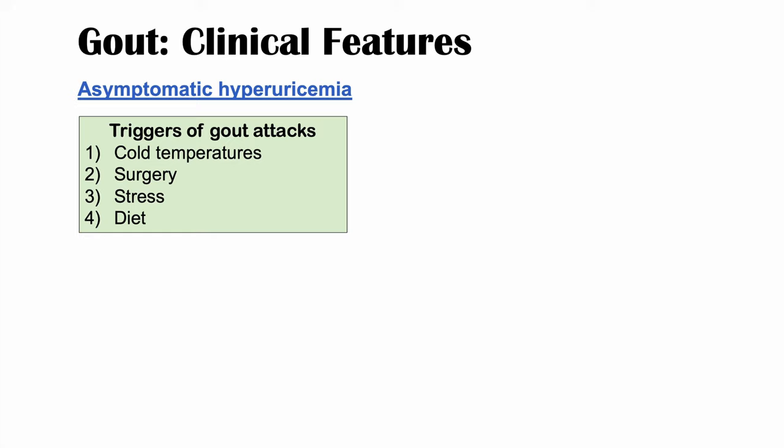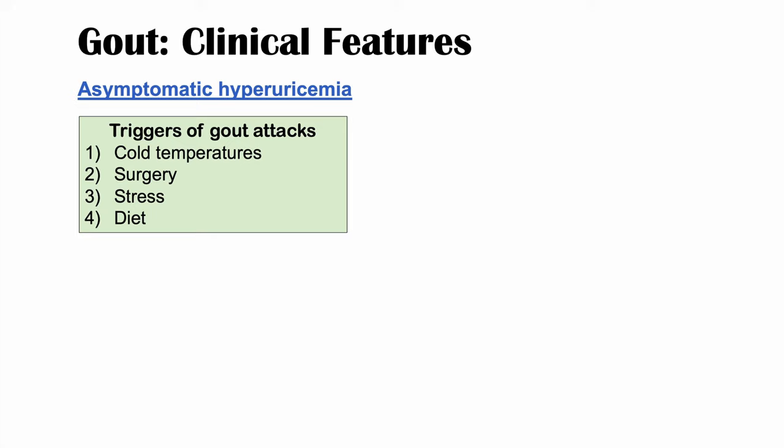Patients may have asymptomatic hyperuricemia — high uric acid levels in the blood without symptoms — for years before having typical gout symptoms. Then a trigger can lead to a gout attack. Triggers include cold temperatures, surgery, stress or trauma, and diet. For example, consuming a high level of alcohol like beer, eating fatty foods, or taking certain medications like aspirin could trigger a gout attack.